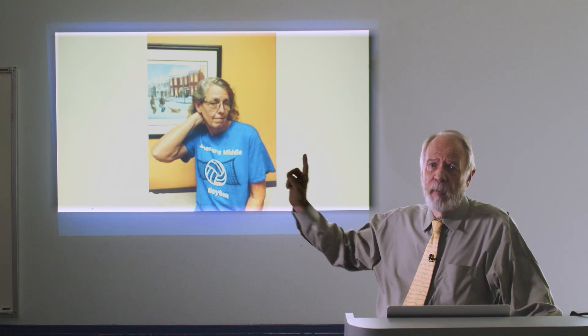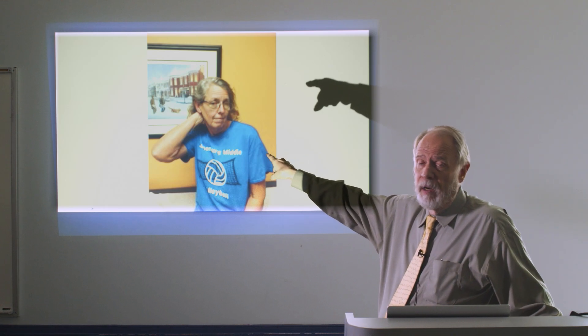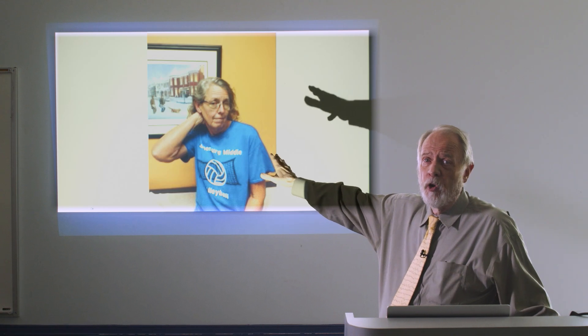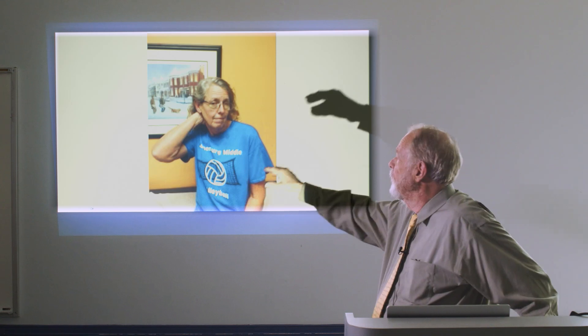This is a lady that I was treating with Botox for her cervical dystonia. She's found that she can put her hand behind her head and straighten her neck. If she were to remove her hand from behind her head, her head turn and tilt would get much, much worse. That's one example of a geste antagoniste.